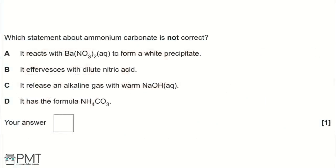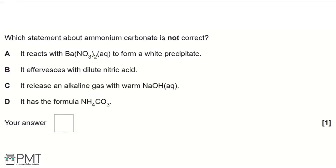Which statement about ammonium carbonate is NOT correct? Option A: it reacts with barium nitrate to form a white precipitate (barium carbonate) — this is correct. Option B: it effervesces with dilute nitric acid, producing CO₂ — also correct. So A and B are not the answer we're looking for.